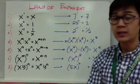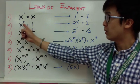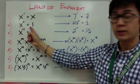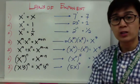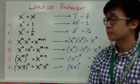For any number raised to 0, your answer will be 1. So in this example, if I have 23 raised to 0, it is simply 1.